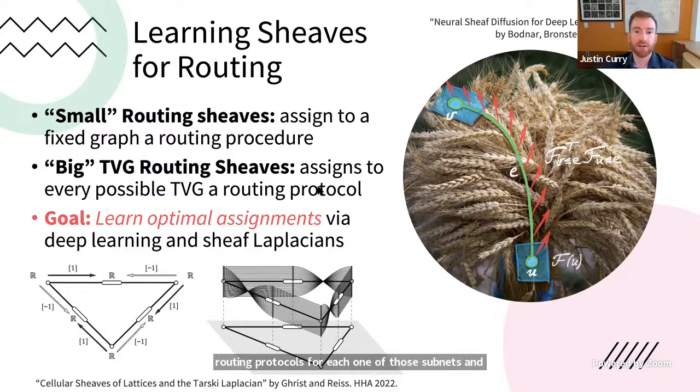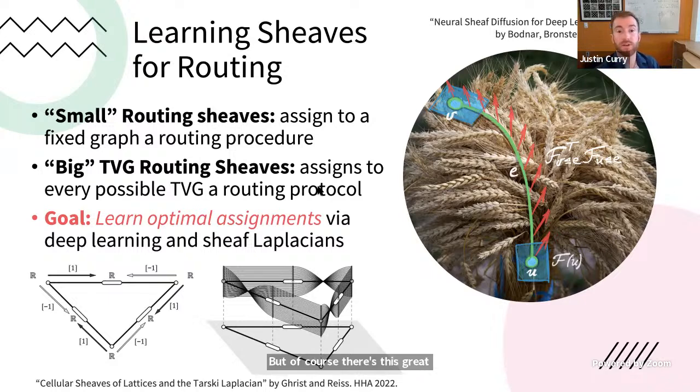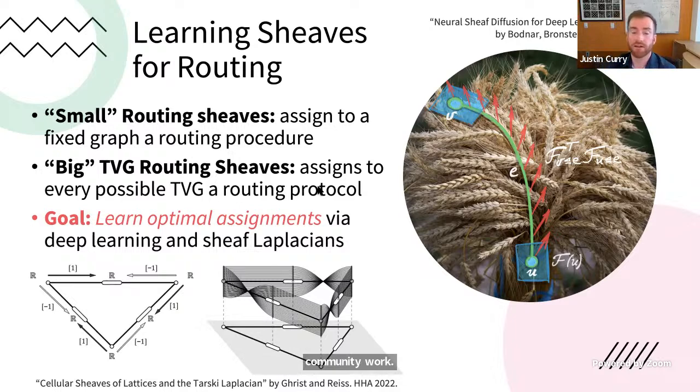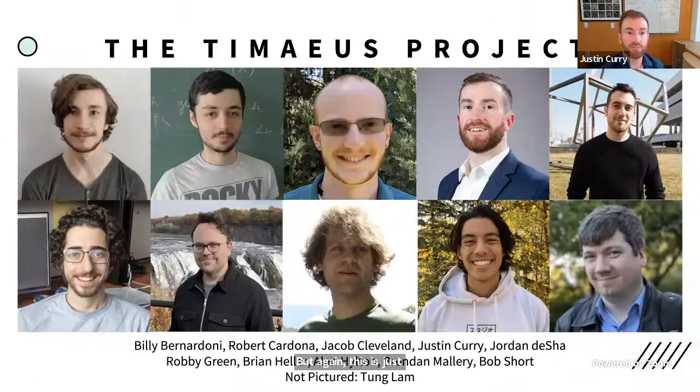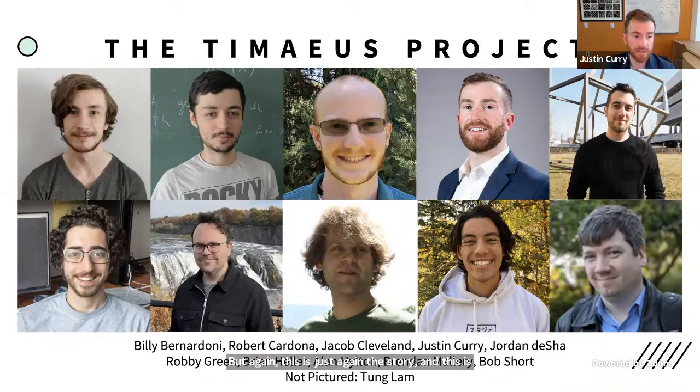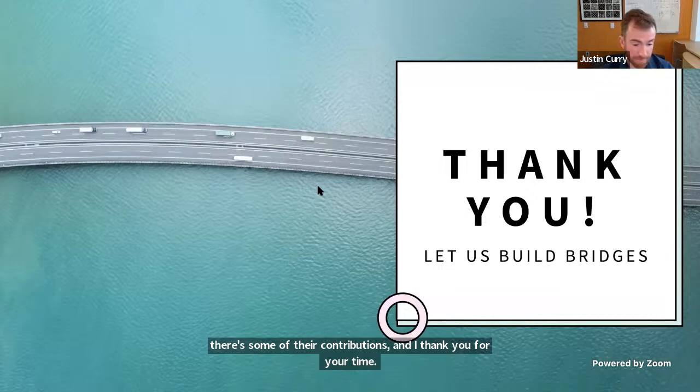And then ideally what these will do is allow us to kind of carve out the open sets or strata in the space of all time varying graphs so that we can learn routing protocols for each one of those subnets and then glue them together using the machinery of sheaves. And again, there's a lot of work on applied sheaf theory. I'll highlight some work by my advisor and one of his students, Hans Riess. But of course, there's this great graph learning community work by Michael Bronstein at Oxford and Christian Bodnar at Cambridge. But again, this is just the beginning of the story. And this is part of a huge multi-person project called the Timaeus Project. And here are some of my collaborators, mostly students. And here's some of their contributions. And I thank you for your time. Look forward to any questions you have. Thanks, Justin.